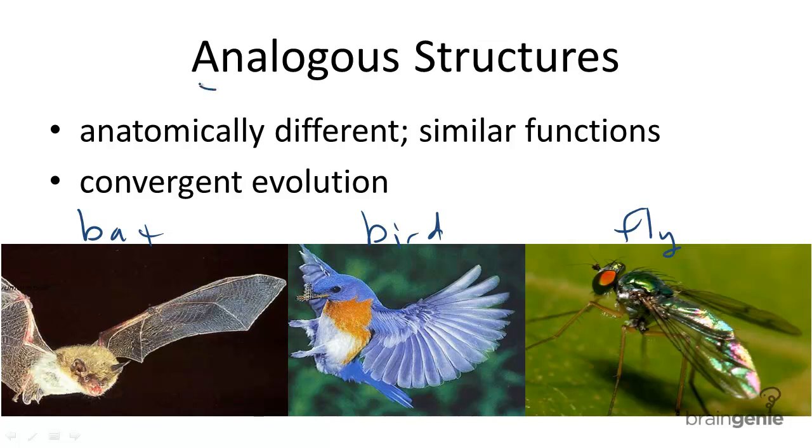First, an analogous structure, as opposed to a homologous structure, so put opposite, are anatomically different. But what does that mean? Well, if we were to compare the wing of a bat,